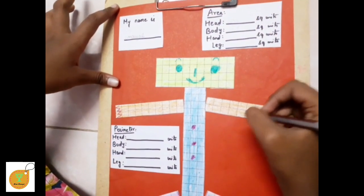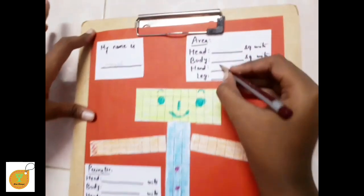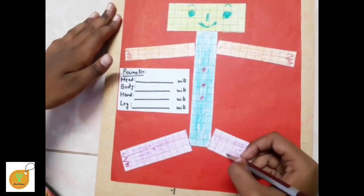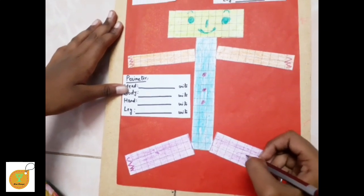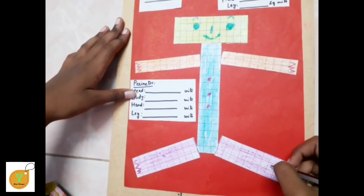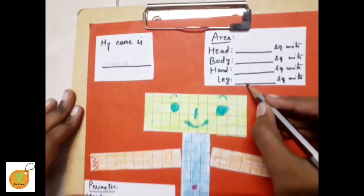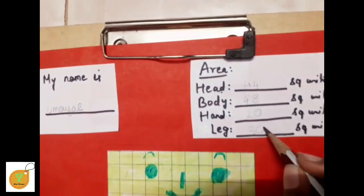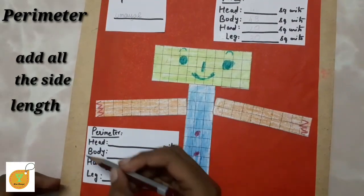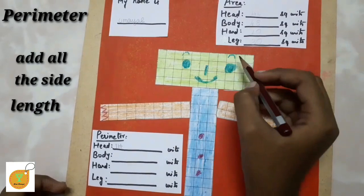Next, the area — you can see the arm is 20 square units and the other arm is 30 square units. You can see the arm is complete.